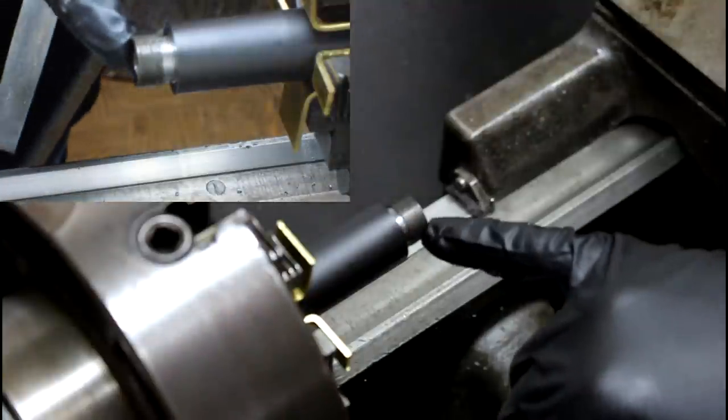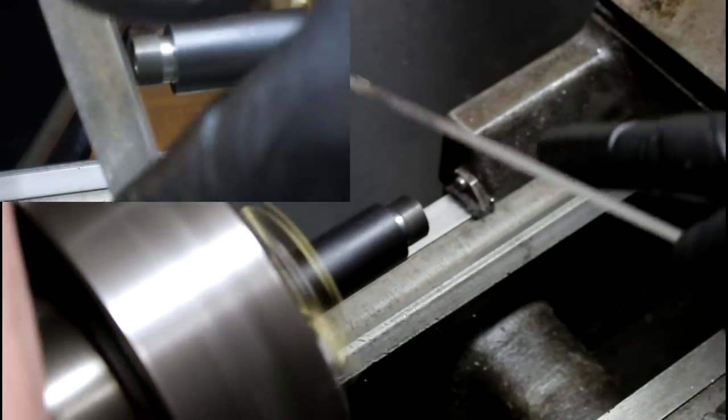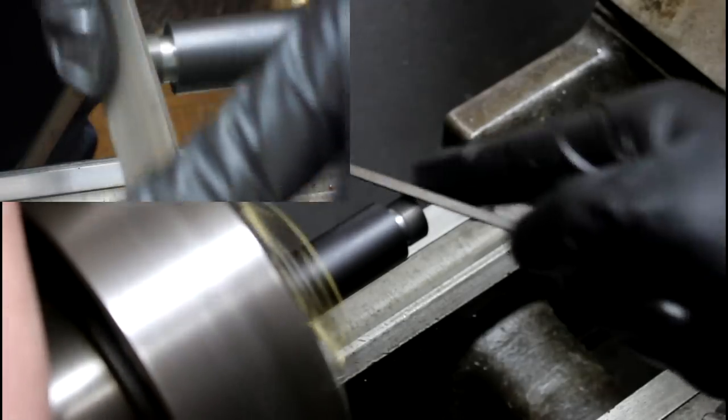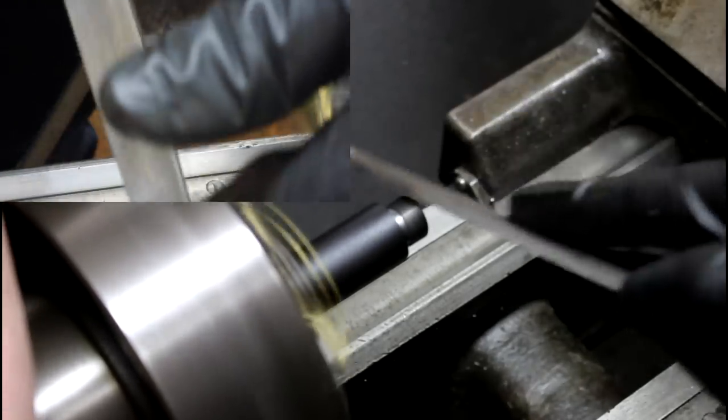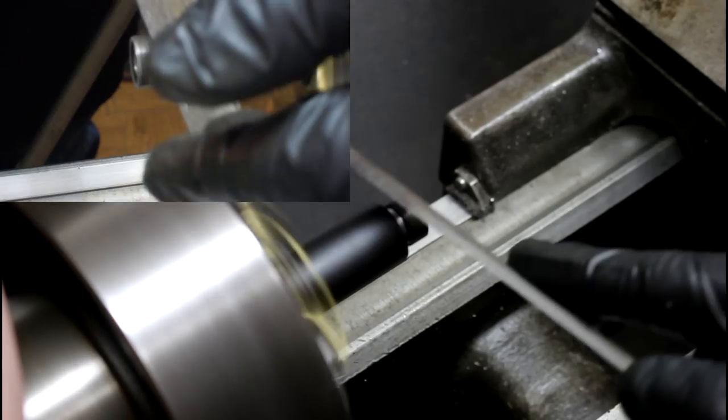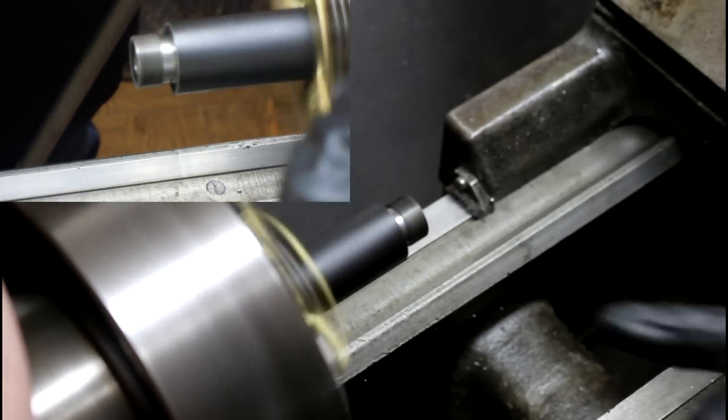Some guys make little recess cuts on the front. I don't like that. So I just come in here with a file and knock that corner off, or knock that edge off. And then I'm going to just knock this off just a little bit, the corner of the barrel here.